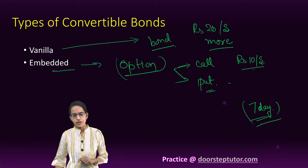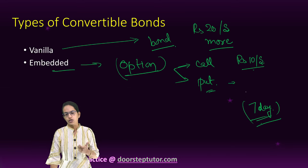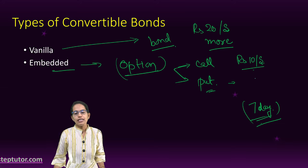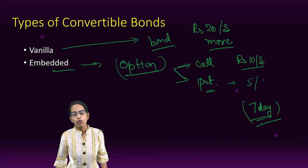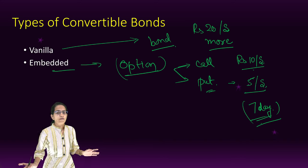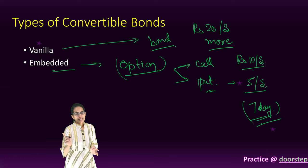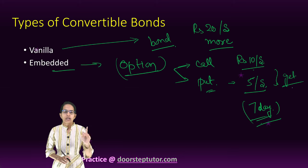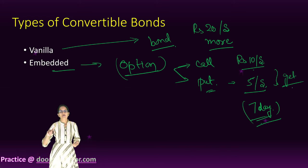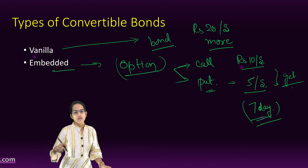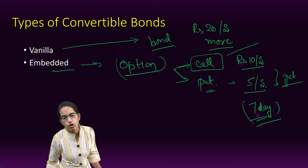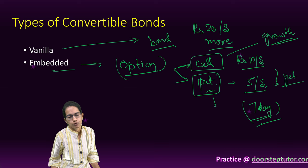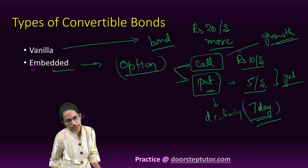A put option says the other way around — you have the option to sell the stock. That means you forecast that in the next 7 days the rate would fall. If the present rate is 10 rupees per share and it falls to 5, whatever difference it falls by I'll get that amount under the put option. If it does not fall below 10, I lose everything. Under embedded convertible bonds we focus mainly on the call option, which is on the positive side where you have an option of a growing stock. The put option is where prices for the stock would be declining.